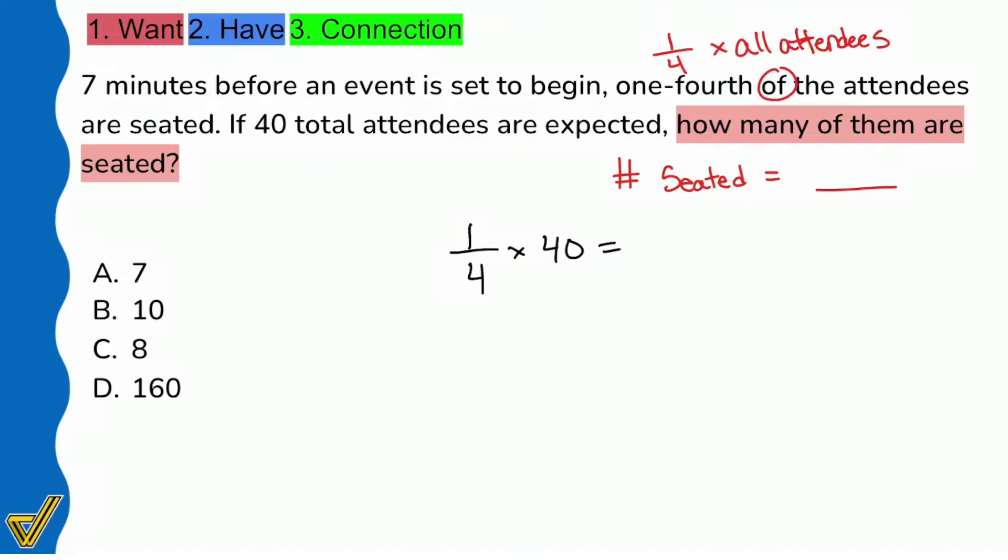Remember that when we're multiplying fractions, we can put any number that's just by itself over one. So this is essentially going to be 40 divided by 4, which is going to be 10. Ten of these folks are seated, and we are good.